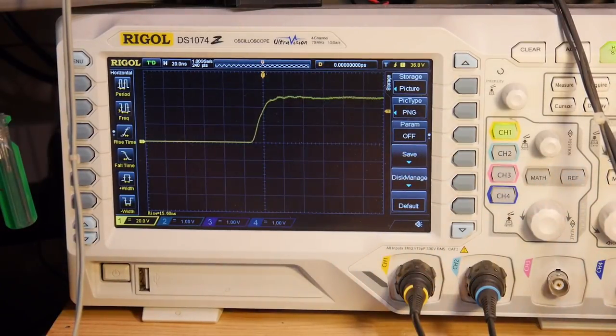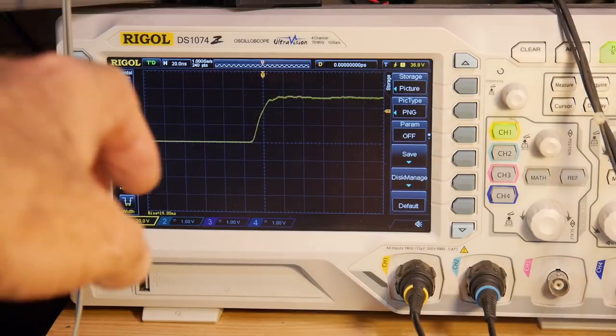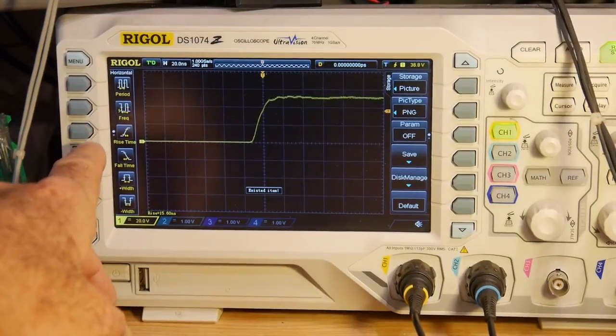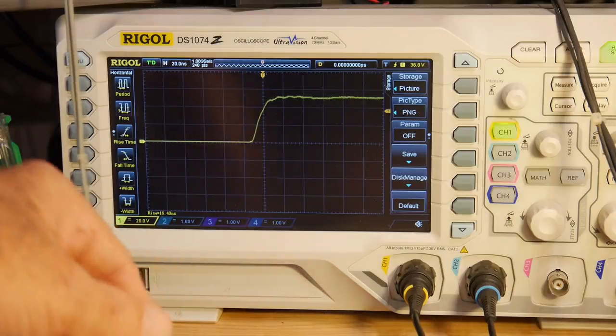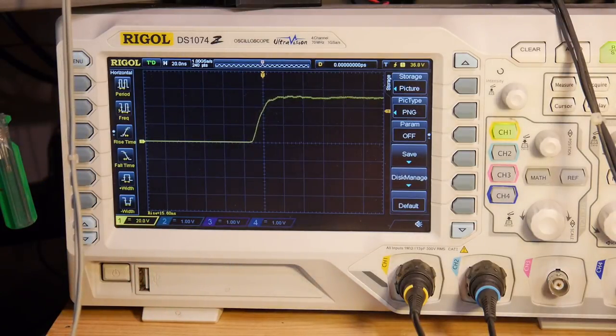So, we are on 20 nanoseconds per division. And if we click on rise time. It says 15. So that's, I think, the 10% to 90%. 15 nanosecond. So, yeah. It's doing just about what I expected it to do.